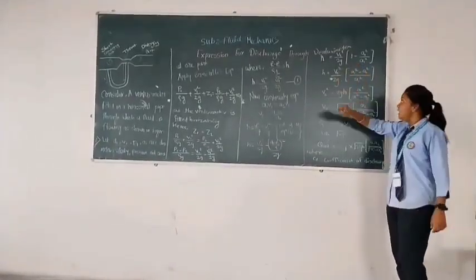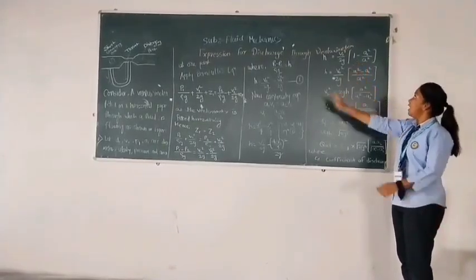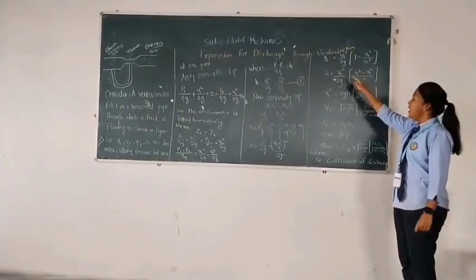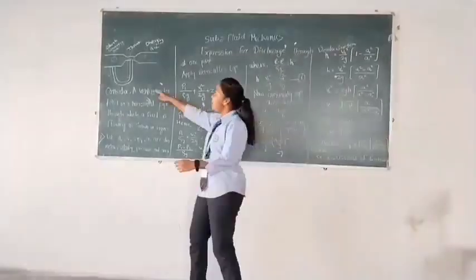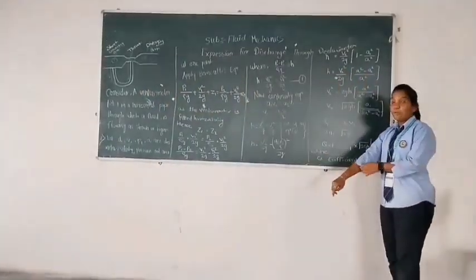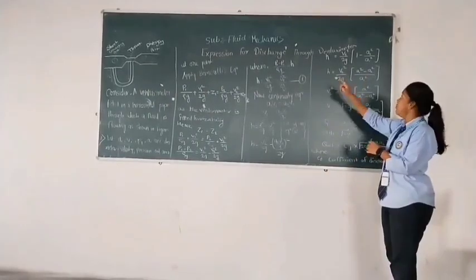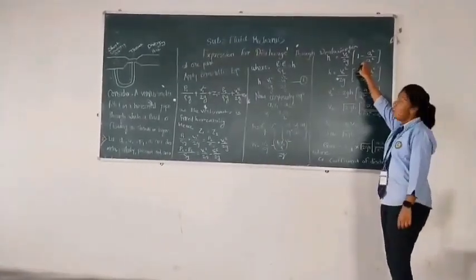Now here the question arises, from where does the Sg/S come? The Sg/S - 1 comes because there is a heavier liquid put in the U-tube. As you see in the diagram, there is a U-tube manometer connected. This term comes from the heavier liquid, because in the U-tube manometer we put heavier liquid, therefore we consider Sg/S - 1.